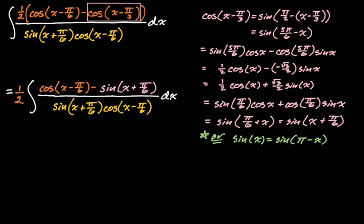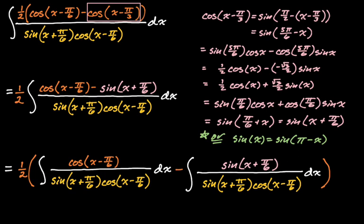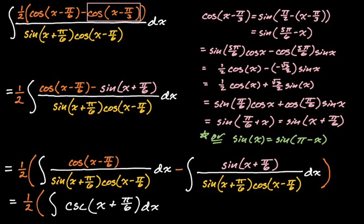This gives us our new form, and I'm also taking out the one half because it's a constant multiple. Now I'll break the integrand into two fractions — there's subtraction in the numerator, so break it up. In the first fraction, cosine of x minus pi over six over cosine of x minus pi over six reduces to one over the sine of x plus pi over six, and one over sine is cosecant. So we have one half times the integral of cosecant of x plus pi over six. For the second integral, we have one over cosine of x minus pi over six, which is the secant. So minus the secant of x minus pi over six.